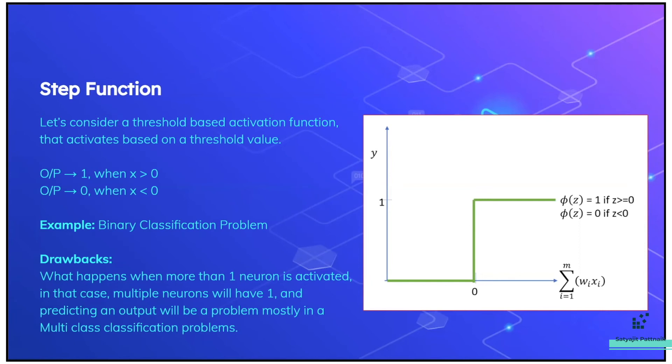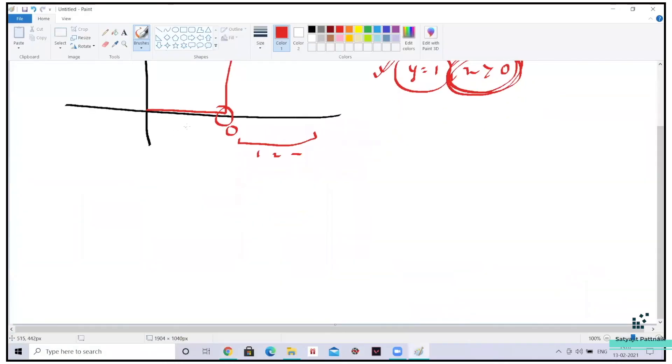But the only drawback with step function is that, let's say you are using step function in a multi-class problem. Let's say you have multiple classes like cats, dogs, and horses. The only drawback is that, what happens when more than one neuron is activated? In that case, multiple neurons will have one and predicting an output will be a problem, mostly in multi-class classification.